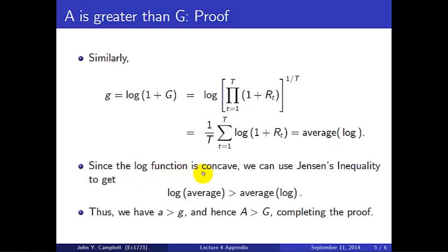Now the log function is concave. It looks like a utility function, remember the concave utility function we were looking at in class. So we can use Jensen's inequality, which tells us that for any concave function, the concave function of the average is bigger than the average of the concave function. That's just a way of saying that the concave function is always above a straight line connecting any two points. So the log of the average is bigger than the average of the log.